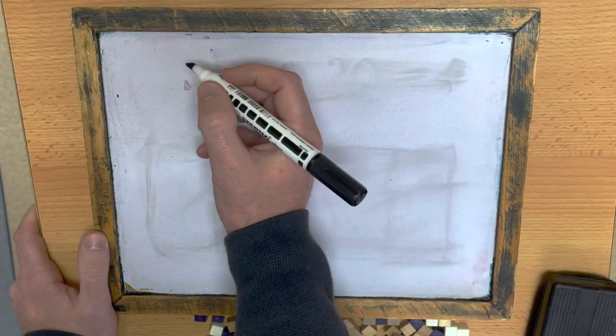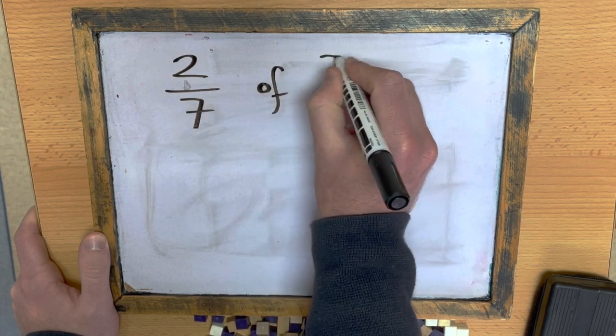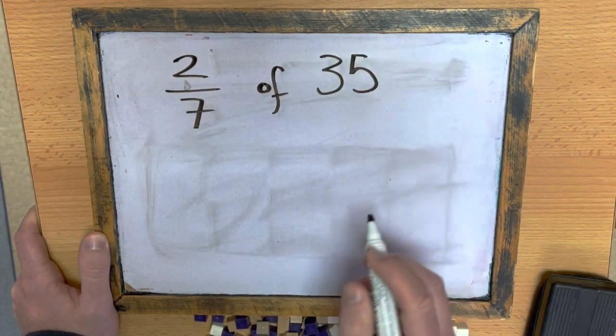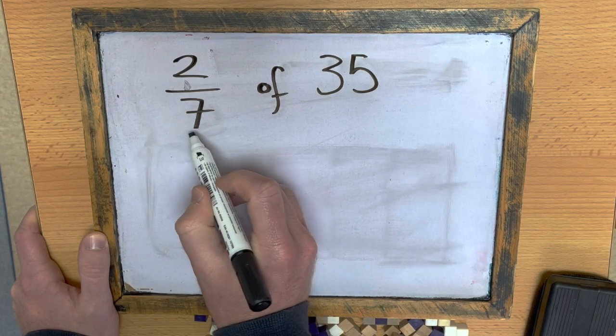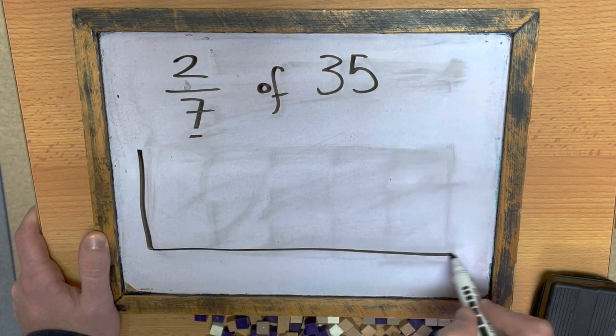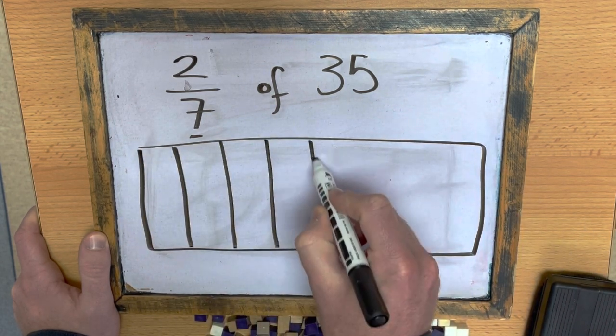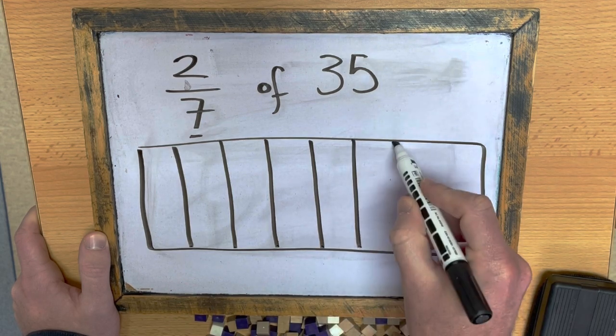How about if I want to find two-sevenths of 35? So, this time I'm going to draw a rectangle with seven parts to it. 1, 2, 3, 4, 5, 6.